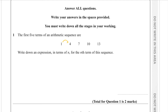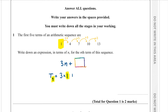To get from one term to the other, we just add 3 each time, so the term-to-term rule is add 3. Repeated addition is multiplication, so the nth term will be 3n plus something. To find the missing number, we take the first term and replace n with 1: 3 times 1 plus something equals 1. The only way this equals 1 is if we subtract 2, so the nth term is equal to 3n minus 2.